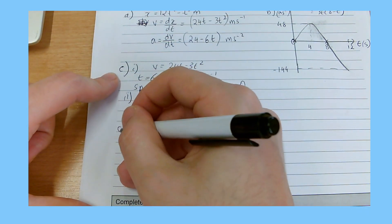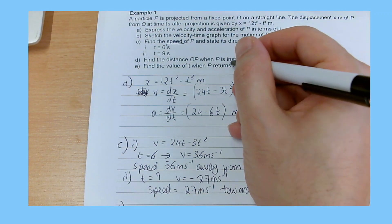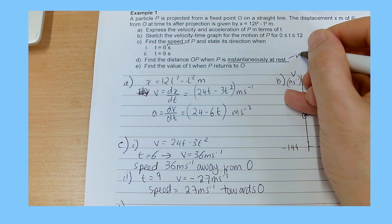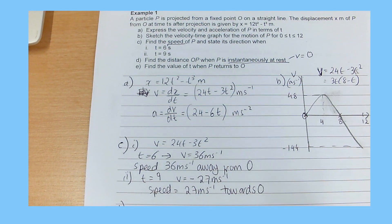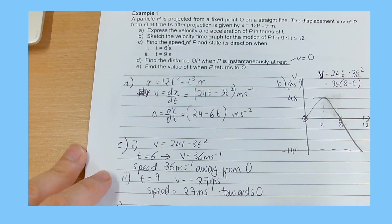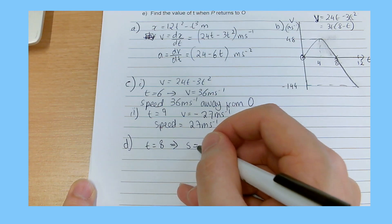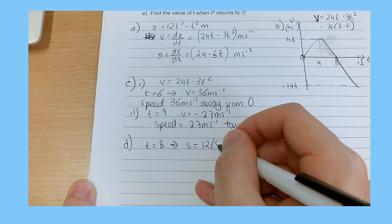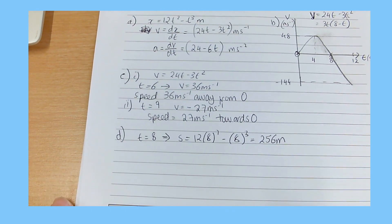Part D: find the distance OP when P is instantaneously at rest. When an object is instantaneously at rest, velocity equals zero. From our graph, this occurs at t equals 8 seconds. Substituting t equals 8 into the displacement equation gives 256 metres — that's the distance from O to P.